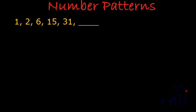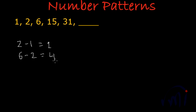The first step I suggest to find the logic in a number pattern or number series is to find differences. So the second term 2 minus the first term 1 gives a difference of 1. The third term 6 minus the second term 2 gives a difference of 4. And 15 minus 6 gives a difference of 9.